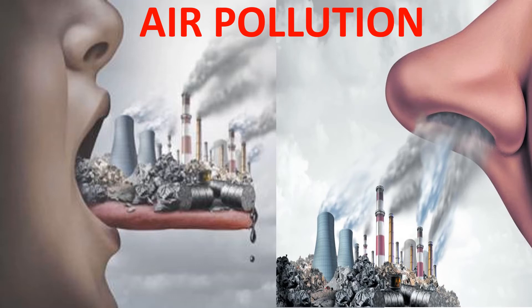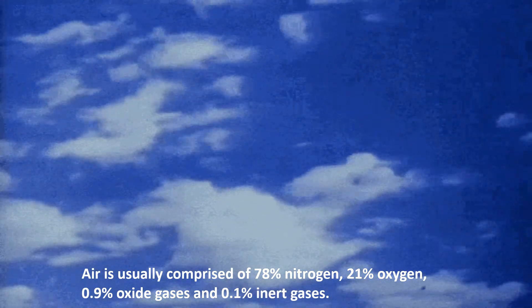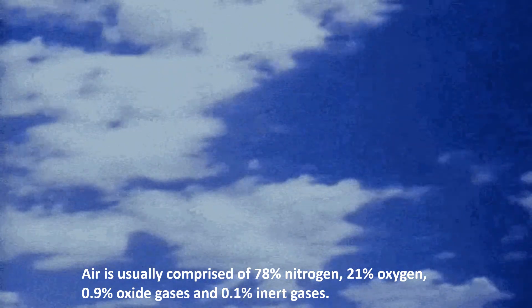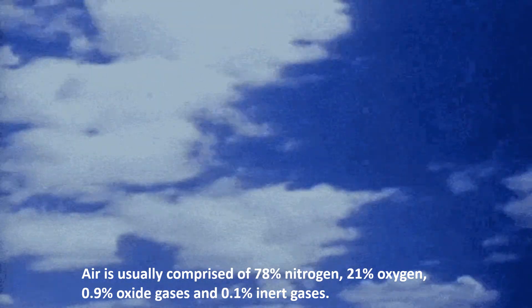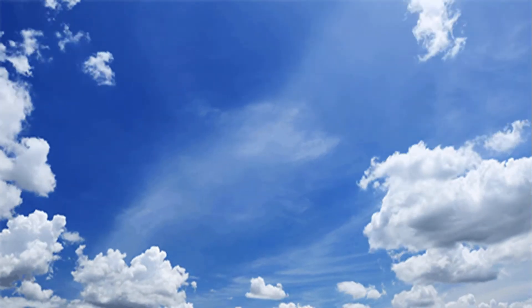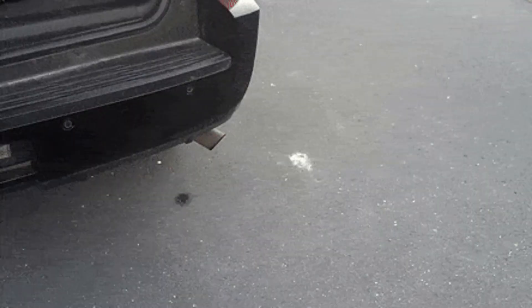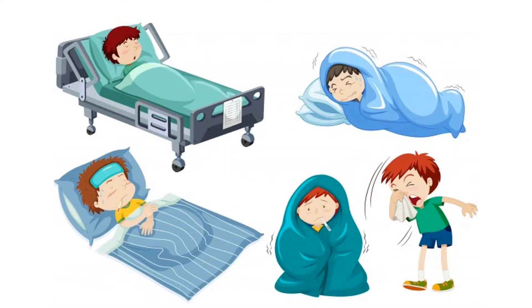Air pollution. Air is usually comprised of 78 percent nitrogen, 21 percent oxygen, 0.9 percent oxide gases, and 0.1 percent inert gases. When the air becomes contaminated with other elements such as poisonous gases or particles, it can cause serious problems to human health.